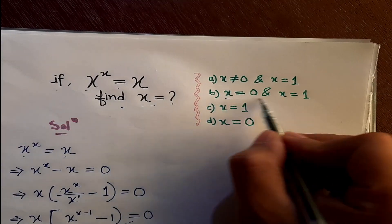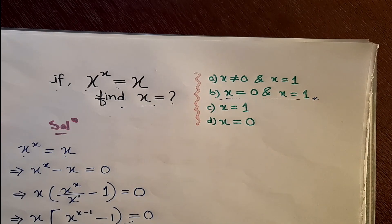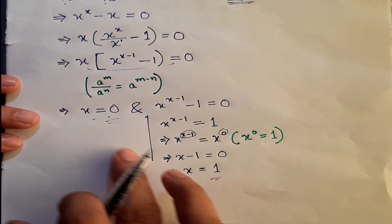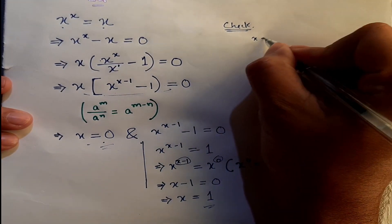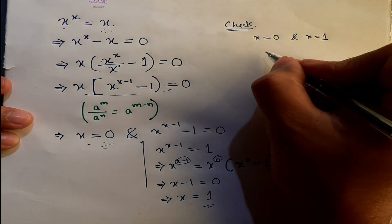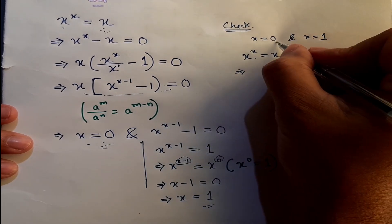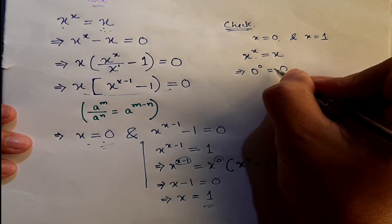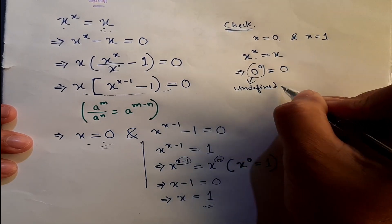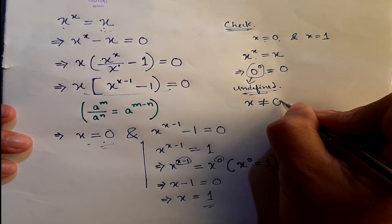Now we need to check these values. If we put x equals 0 into the original expression, we get 0 to the power 0 equals 0. However, 0 to the power 0 is undefined, so we can say that x cannot be equal to 0.